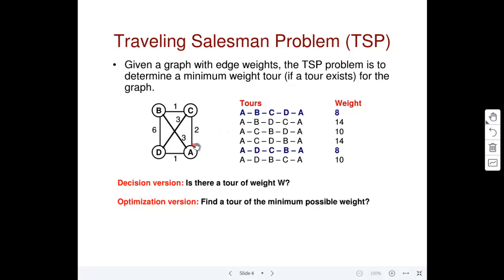You have a salesman who has to visit all four houses, and these are the distances between the two houses. You have to give him a schedule such that he visits all four houses by traveling the minimum distance. Given a complete graph, you can enumerate all possible tours. Since it is a complete graph, any two vertices are connected, so you can say go A, B, C, D, A — that is a tour. You can write down all possible combinations, compute the weight of each tour as the sum of edge weights, and 8 is the minimum weight tour for this graph.